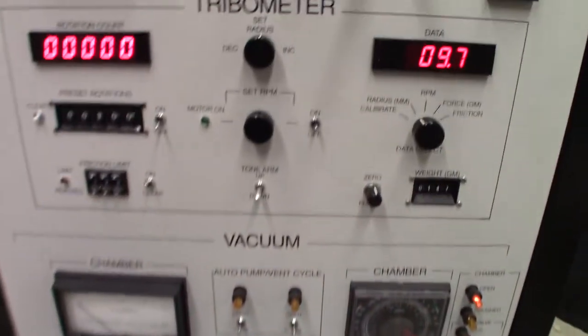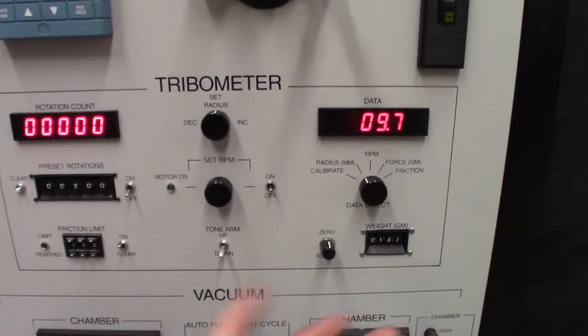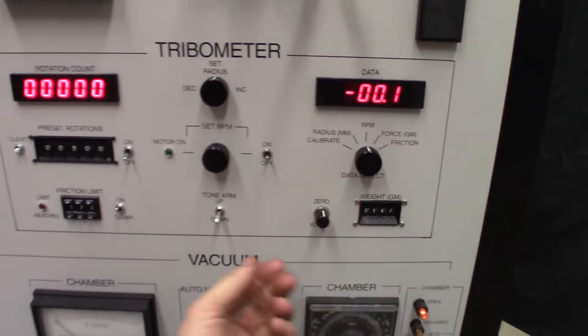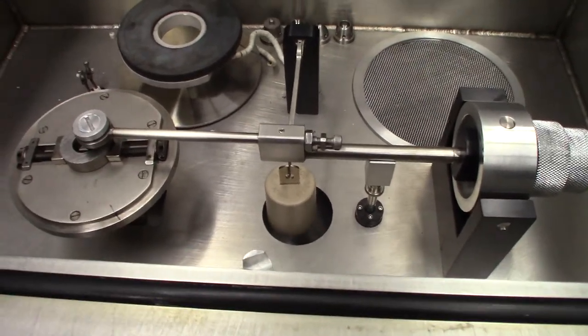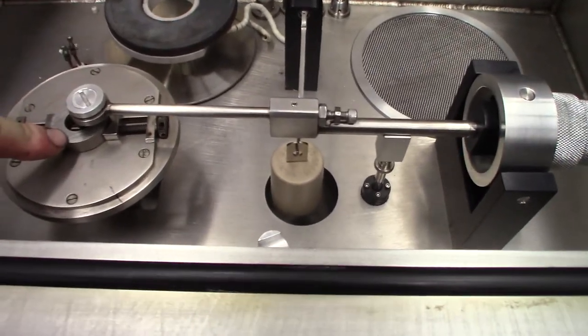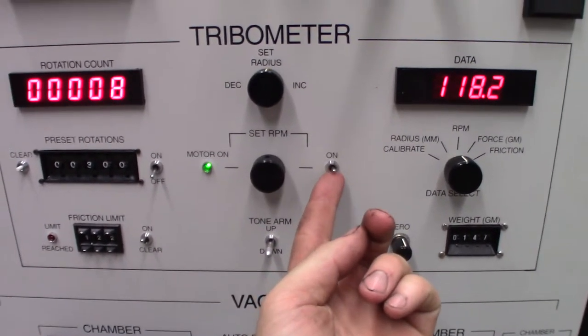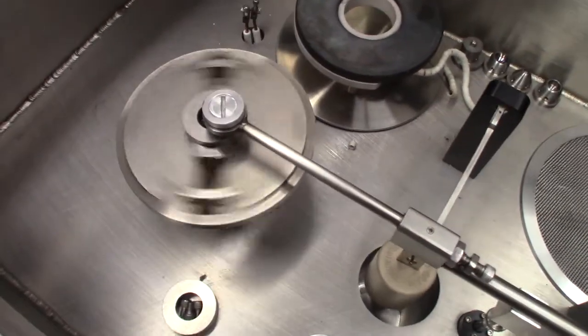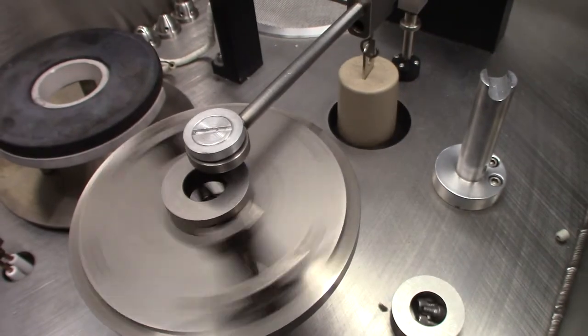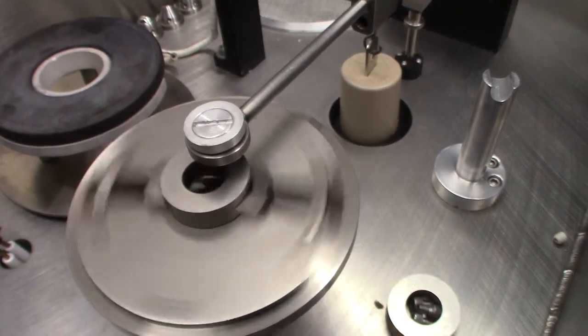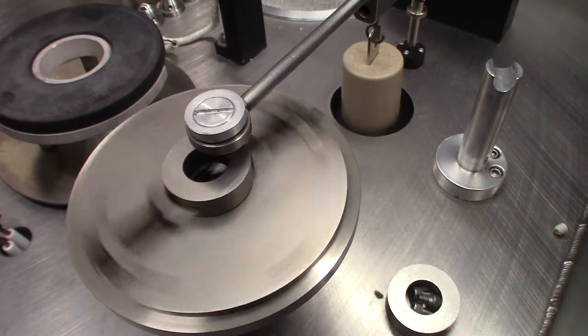So we'll just go ahead and operate the tribometer section. It's pretty simple to use. We'll just set this to RPM. So we want to lower that, I think it's already lowered down. The arm is already lowered down onto the specimen. So then we'll go ahead and turn it on. So now it's rotating at 117 RPM. And there you see it, the ball is engaged against the surface of the specimen.